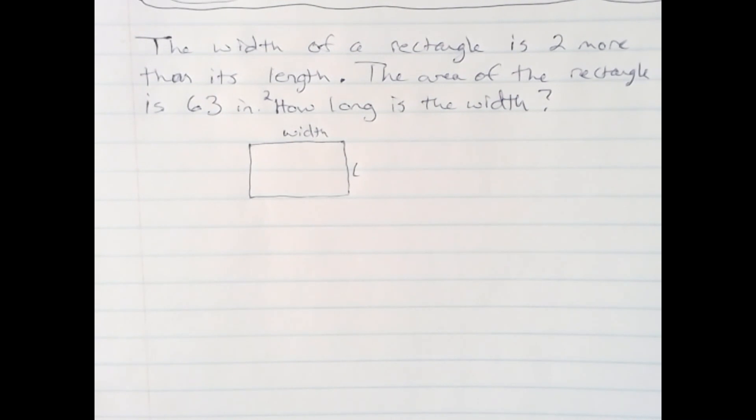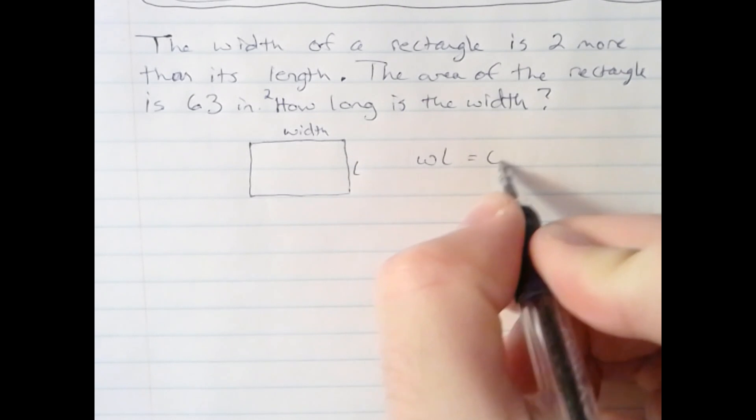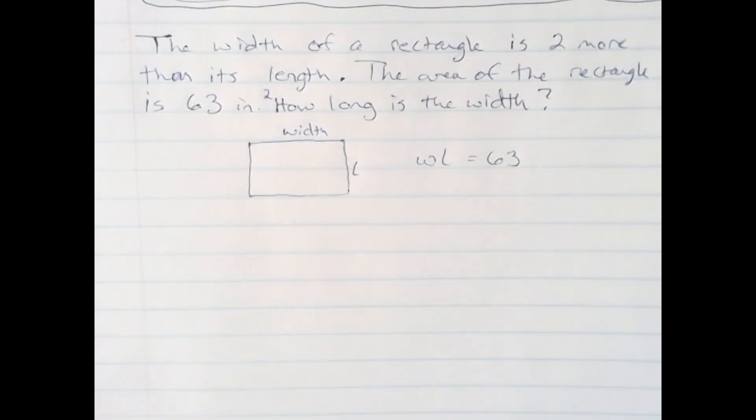We know that the area of a rectangle is width times length. We know it equals 63 when multiplied together.